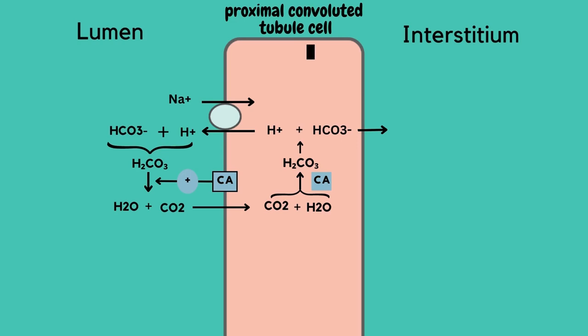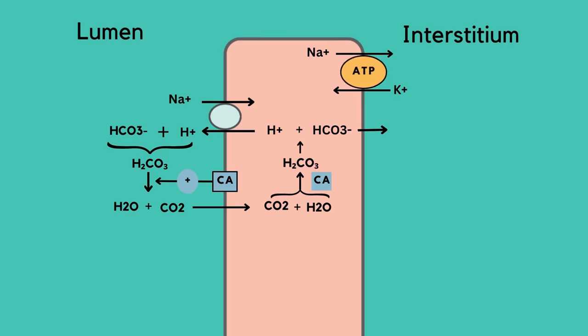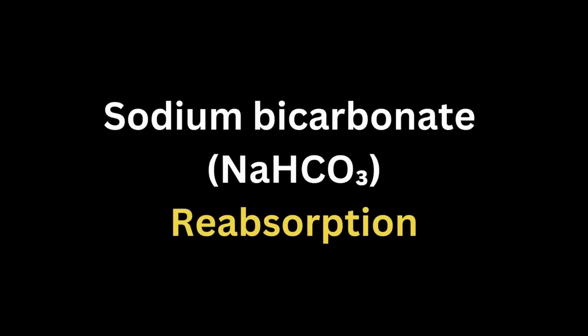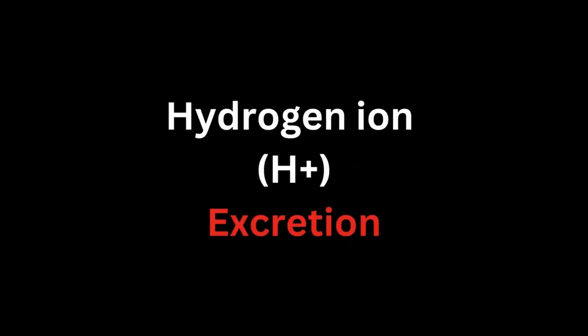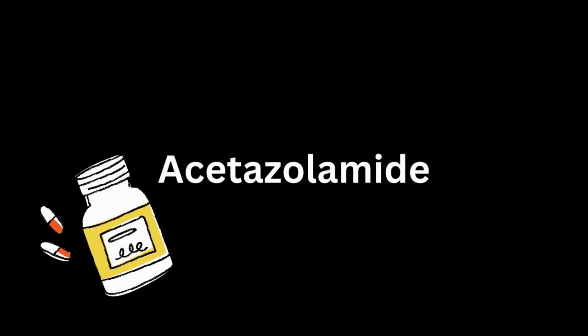The sodium ion that enters the cell will be reabsorbed into the interstitium in exchange for a potassium ion through the sodium-potassium transporter. In conclusion, sodium bicarbonate reabsorption and hydrogen ion excretion is dependent on carbonic anhydrase enzyme activity. This enzyme can be inhibited by diuretic drugs called carbonic anhydrase inhibitors, such as acetazolamide.